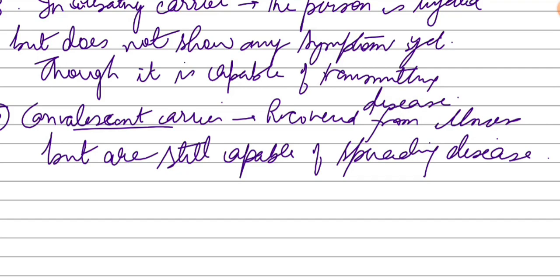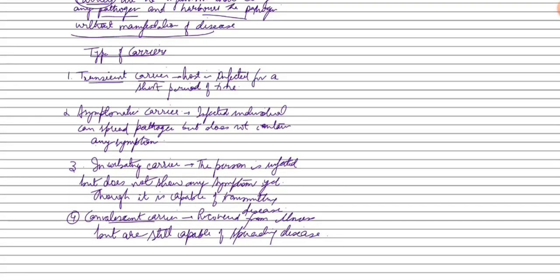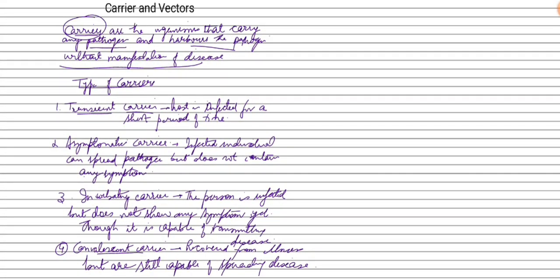So those were the carriers. To summarize, carriers may have symptoms for a short time or no symptoms at all. They can be asymptomatic, incubating, or convalescent carriers — infected but recovered. Carriers are individuals who have the pathogen but not necessarily symptoms, and are capable of transmitting diseases to new individuals. Now we move on to the next topic: vectors.